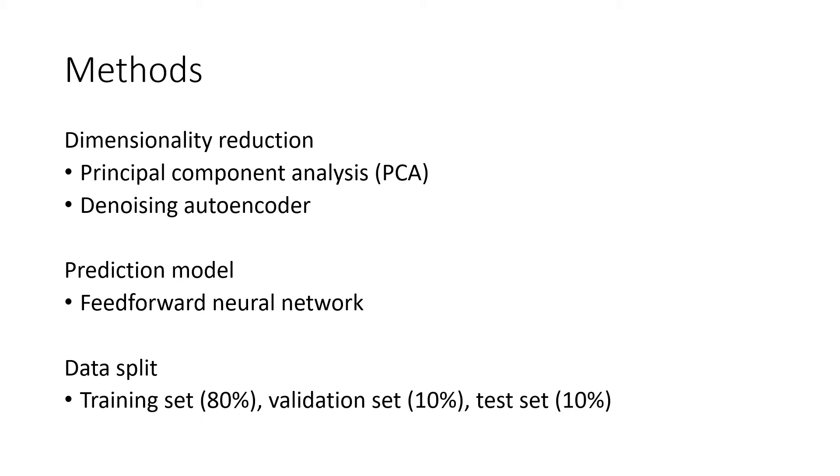In this work, we focus on investigating the impact of employing principal component analysis and autoencoders as methods of dimensionality reduction. As prediction models, we use simple shallow feedforward neural networks. The data is split into a training, a validation and test set.